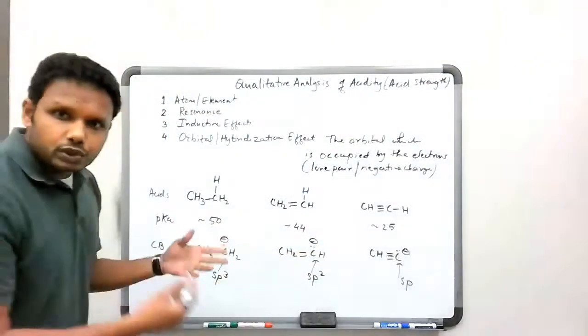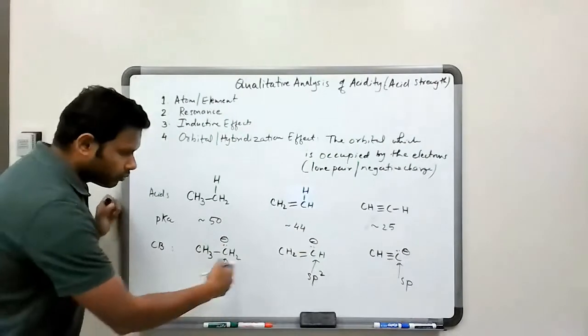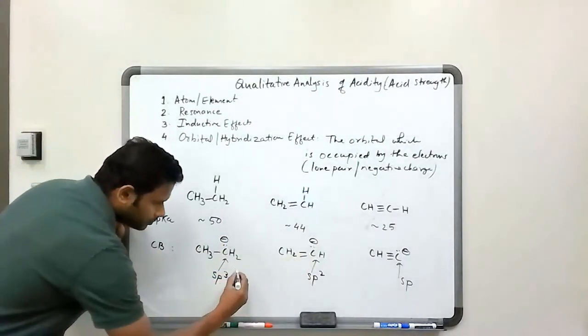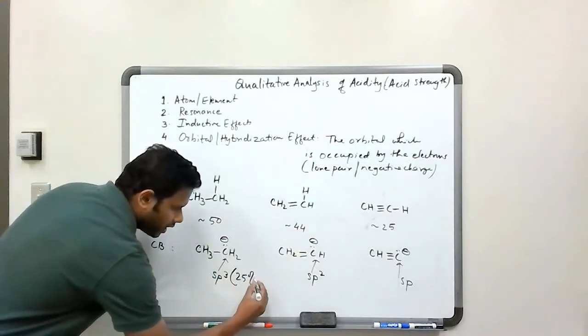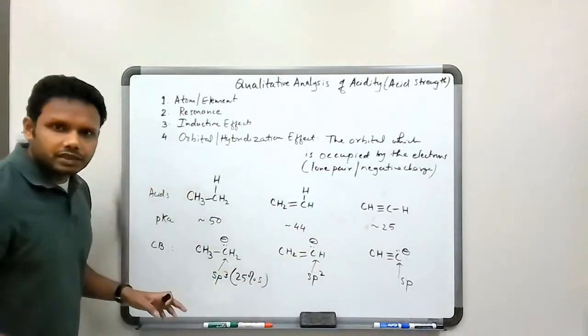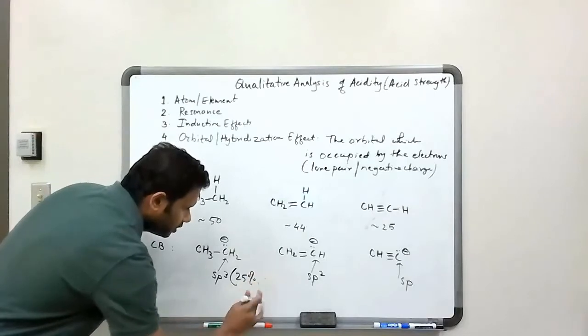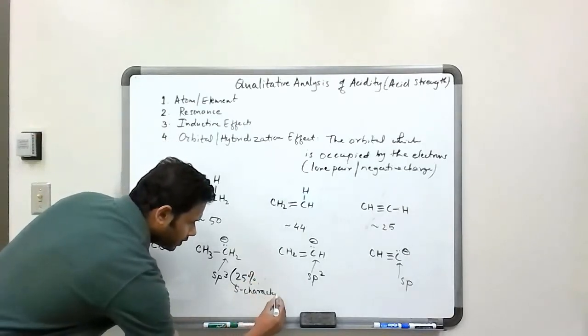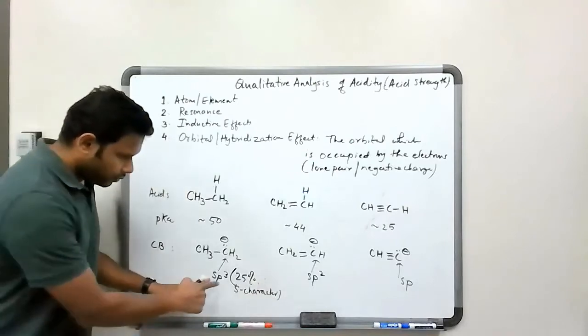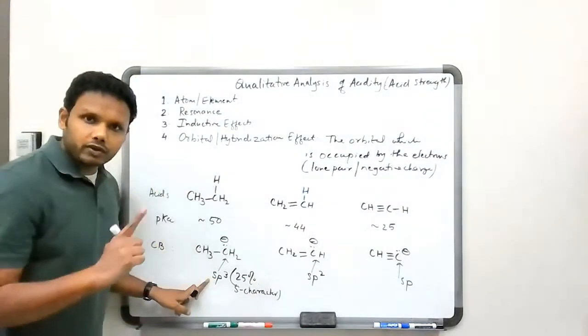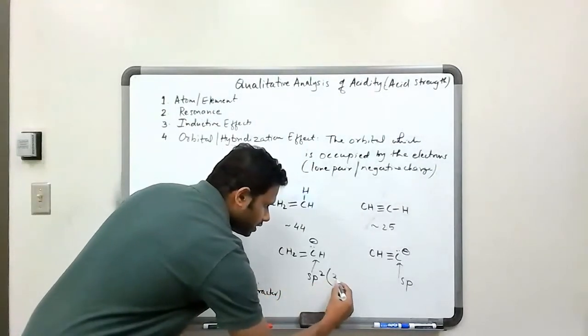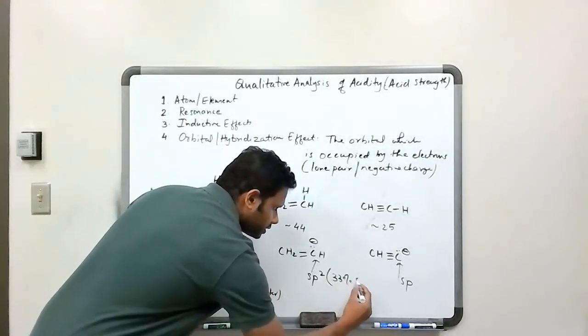And we've talked about this before. We know what the differences in these hybridization states are. So sp3 hybridization has a 25% s character, 25% s character here, because there are four orbitals total and one of them is s, so it's a 25% s. This is a 33% s.